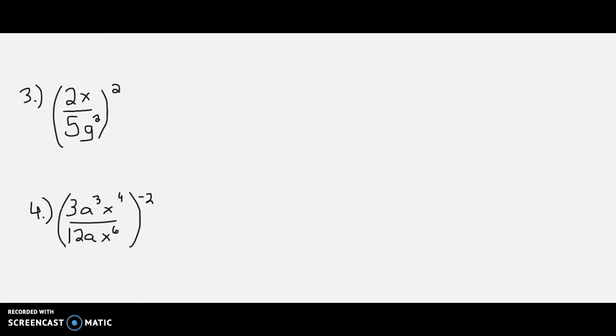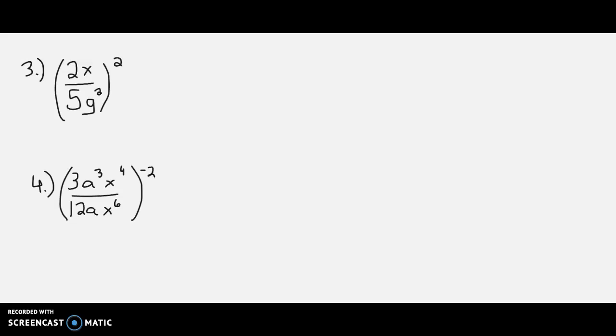Let's look at a couple more examples, 3 and 4 here. For number 3, everything inside the parentheses gets squared first. So we're going to have 4x squared in the numerator. We're going to have 25g to the 4th in the denominator.